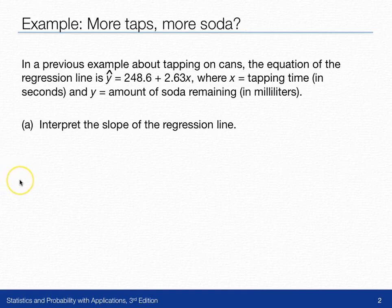There was a previous example about tapping on cans and whether the increased amount of time you tap on cans had any effect on whether the soda overflowed or not. And the regression line had an equation of y-hat equals 248.6 plus 2.63x, where x was the amount of time we tapped the soda can and y was the amount of soda remaining in milliliters in the can.